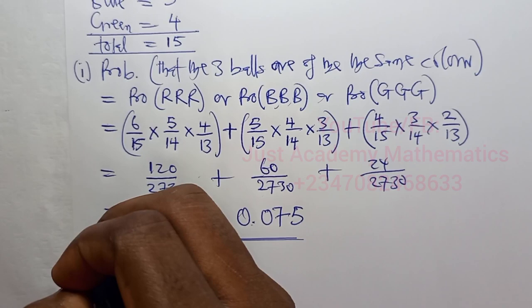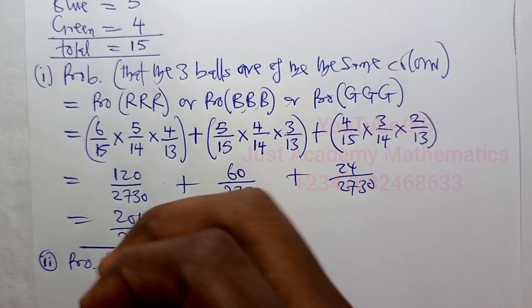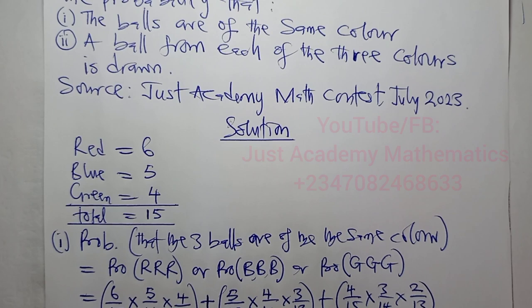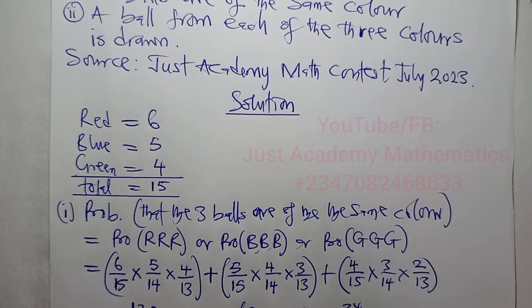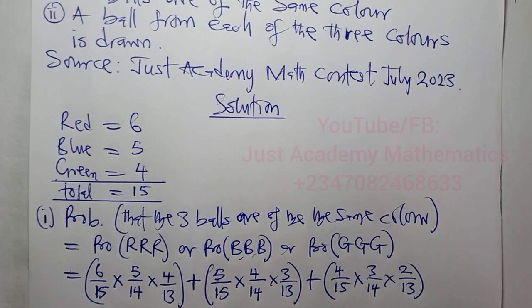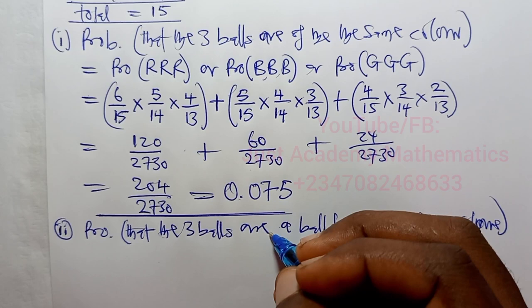For part (ii): the probability of a ball from each of the three colors. That means the three balls drawn are made up of one ball from each of the three colors. Let's work out the possibilities.